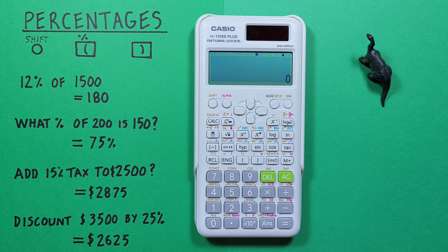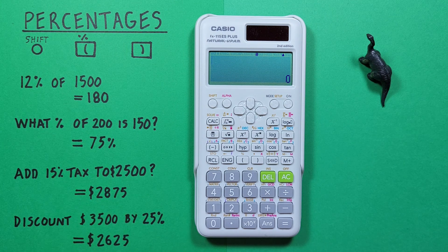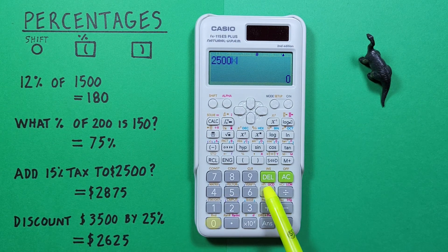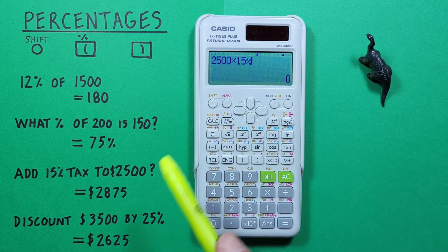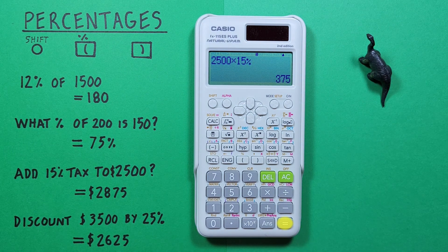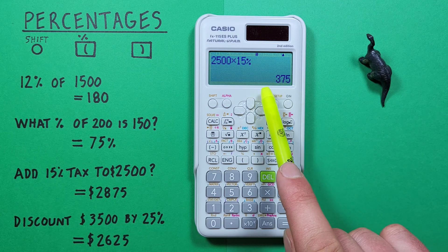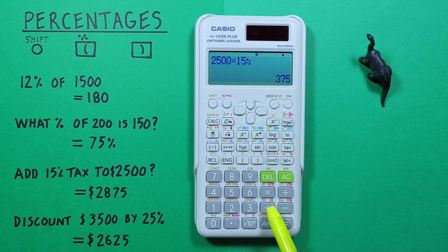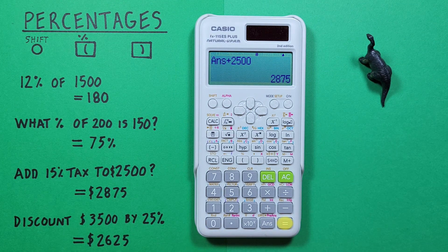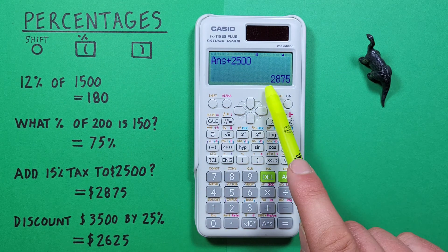We can also use this to determine taxes. Let's say we had an item that was $2,500 and we had to add 15% tax to it. What would be the final cost? First we enter the initial cost: 2500 times 15%, press shift left bracket to get our percent sign and press equals. We get 375, which is the 15% tax on 2500. Then we add that to the original value: plus 2500 press equals, and the final cost after taxes is 2875.